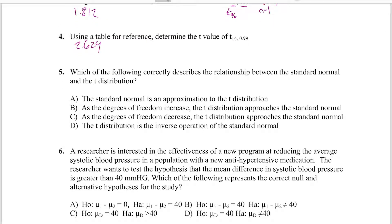Moving on to number five, we're comparing a t-distribution to a standard normal distribution. As the degrees of freedom increase, the t-distribution approaches the standard normal. Most times this happens around 30 individuals — n of 30, so degrees of freedom of 29 in a t-table. As you increase n from there, the t-value gets closer and closer to the z-value.